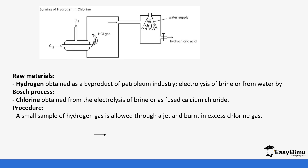A small sample of hydrogen is allowed through a jet and is burnt in excess chlorine gas. From the setup, you can see that chlorine and hydrogen are both fed in and burnt in excess chlorine — hydrogen is burnt in excess chlorine.